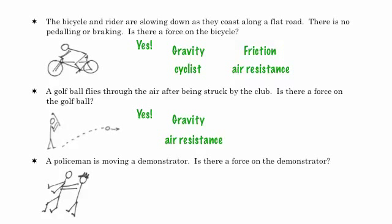Here, a policeman is moving a demonstrator. Is there a force on the demonstrator? Hopefully you've seen the pattern. Yes, of course there's a force on the demonstrator. Gravity's acting to keep the demonstrator strongly rooted to the ground. The policeman is actually pulling the demonstrator. Maybe if the demonstrator's dragging his feet or doing something, there would be friction. But I think you get the idea. We can analyze a whole bunch of situations and say, hey, is there forces acting on these things?